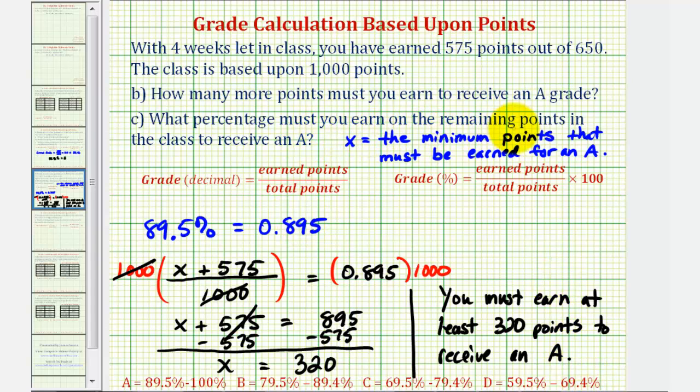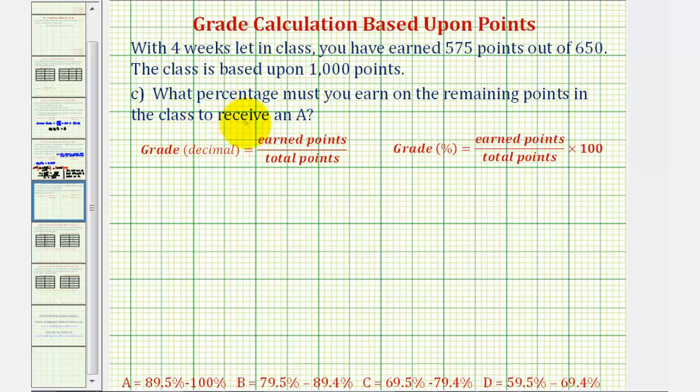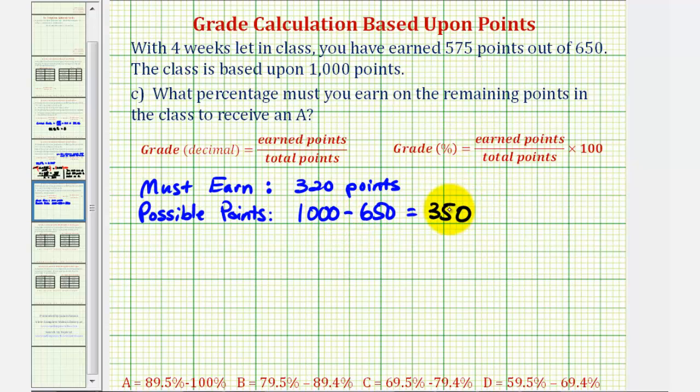Now let's go ahead and answer the last question. What percent must you earn on the remaining points in the class to receive this A grade? Well from part B, we know you have to earn 320 points. And then for the possible points, there's a total of 1,000 points available. But notice that you've already earned 575 out of 650 points. So the possible points would be 1,000 minus 650. So there's only a possible 350 points left in the course.